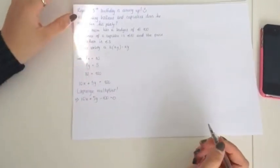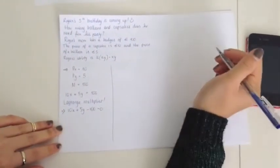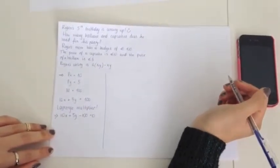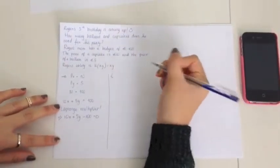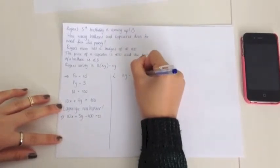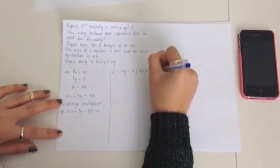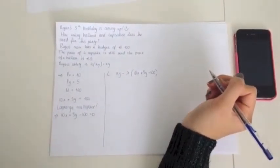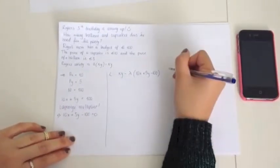So to then set up the Lagrange multiplier, which is basically just a method of optimizing an equation, we have to write L equals your utility function X times Y minus lambda times 10X plus 5Y minus 100. So that's L equals your utility function minus lambda multiplied by your budget constraint set to zero.